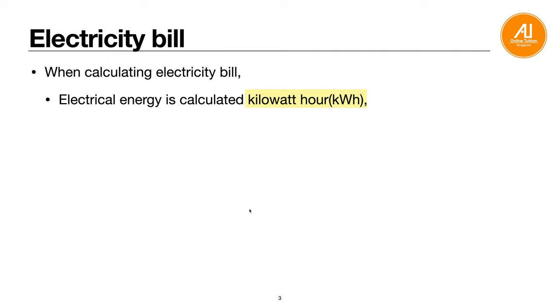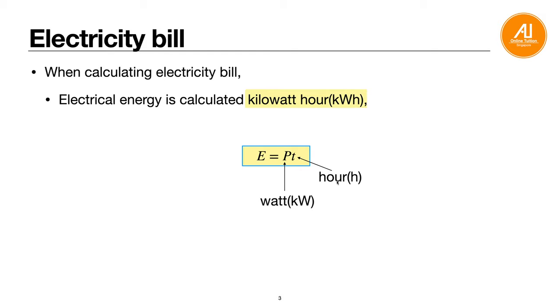Next, electric bill. You will see questions asking you to calculate an electric bill. Electrical energy for billing is not calculated in joules - it's calculated in kilowatt hour, where power is in kilowatt and time is in hours. You always start from E equals Pt, but with kilowatt and hours, giving you kilowatt hour. This unit is only applicable for electric bill; otherwise, energy should always be left in joules.